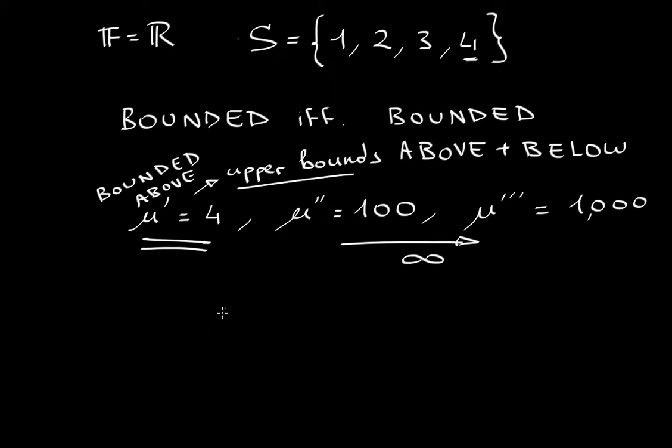Now, let me show you some lower bounds. So l could be 1, right? L prime could be 1. Everything is either equal to 1 or greater than 1. So clearly 1 is less than or equal to any element in the set.